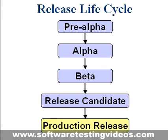Production release. The production release is the final version of a particular product. It is typically almost identical to the final release candidate with only last-minute bugs fixed. A final release is considered to be very stable and relatively bug-free with a quality suitable for wide distribution and use by end users.